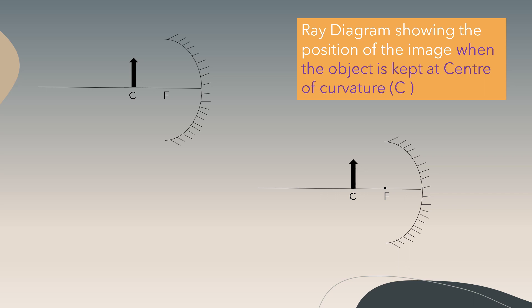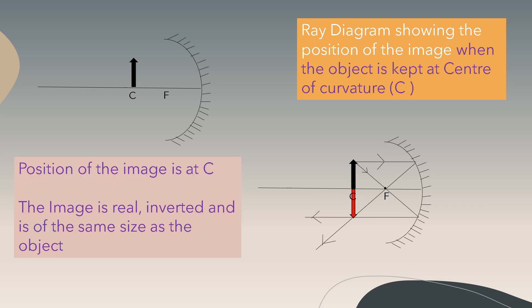Now let's see the ray diagram when the object is kept at the center of curvature. The ray parallel to the principal axis passes through the focus, and the ray that passes through the focus becomes parallel to the principal axis. At the point of intersection we have the image. The image is real, inverted, and of the same size as the object. The position of the image is at C.